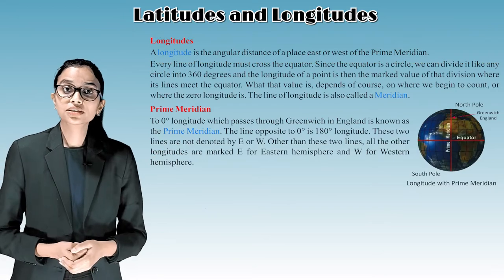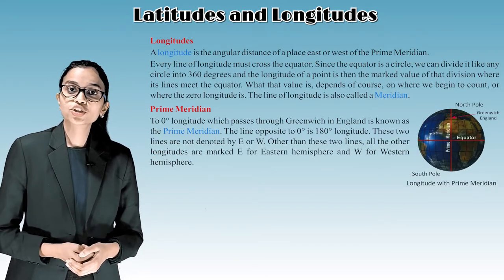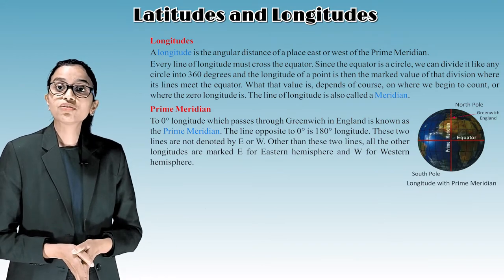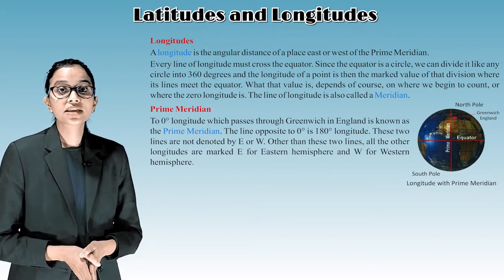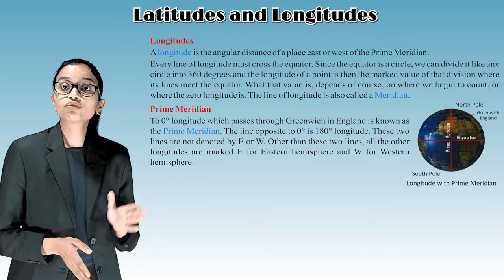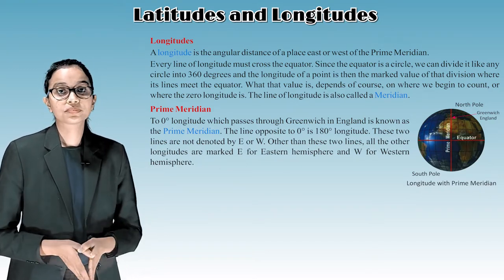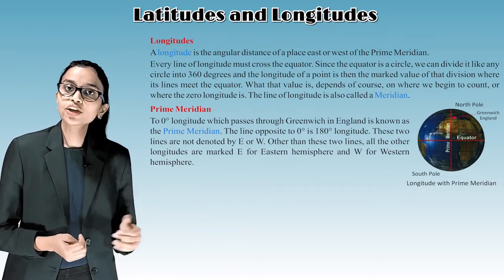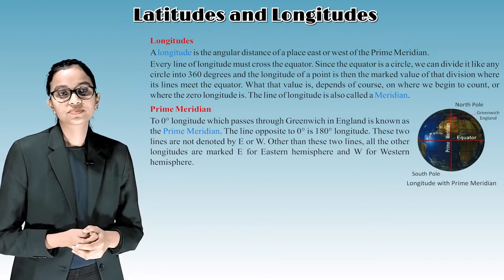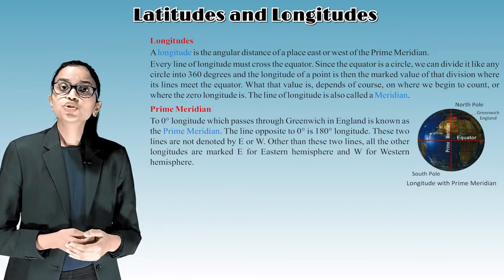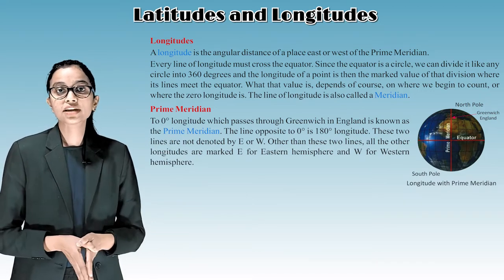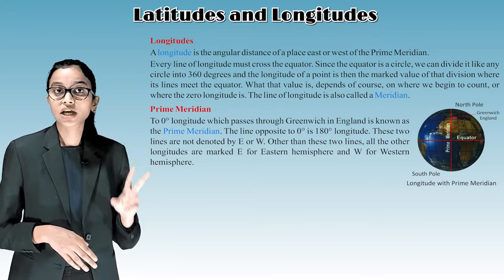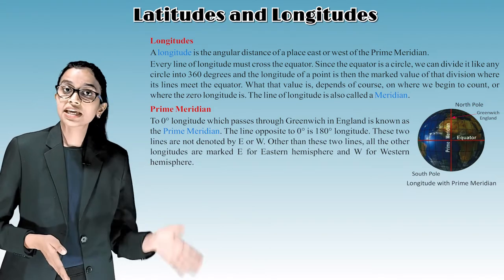Longitudes: A longitude is the angular distance of a place east or west of the prime meridian. Every line of longitude must cross the equator. Since the equator is a circle, we can divide it like any circle into 360 degrees, and the longitude of a point is the marked value of that division where its line meets the equator. The line of longitude is also called a meridian. The zero degree longitude, which passes through Greenwich in England, is known as the prime meridian. The line opposite to zero degrees is the 180 degree longitude. These two lines are not denoted by E or W — that is east or west.